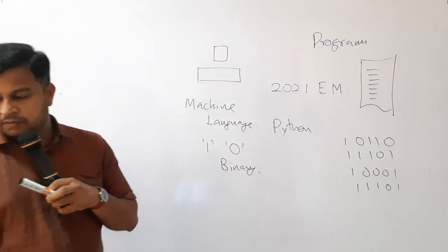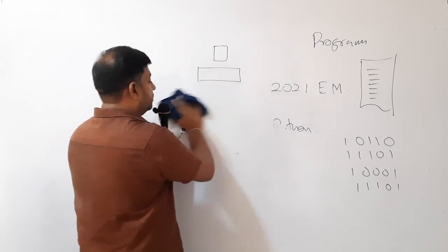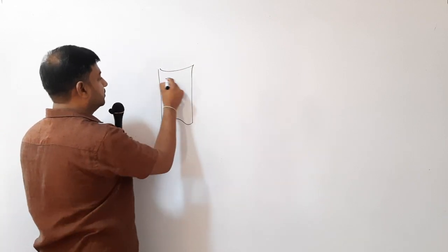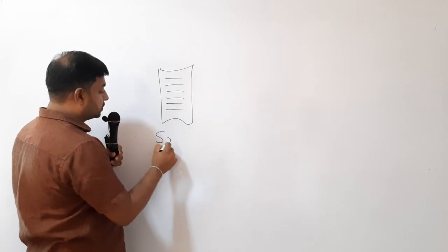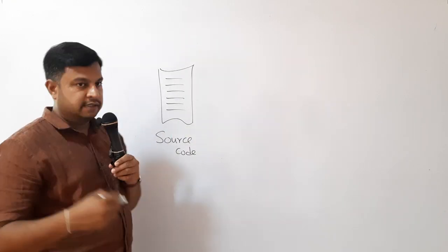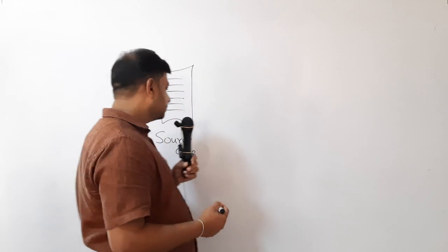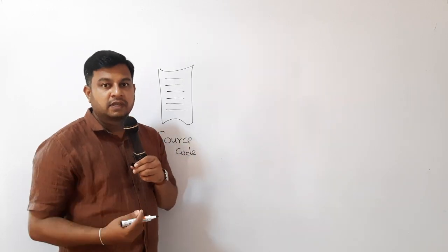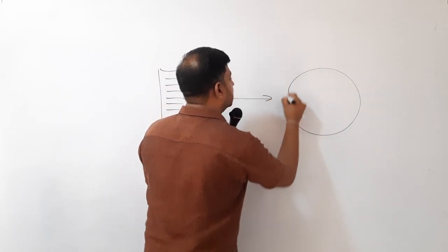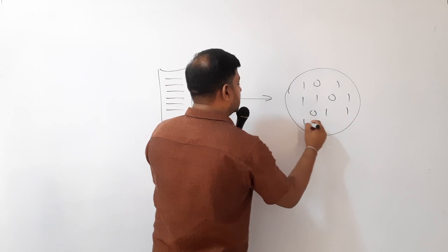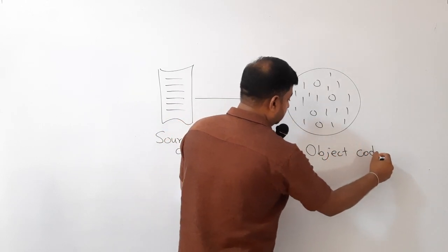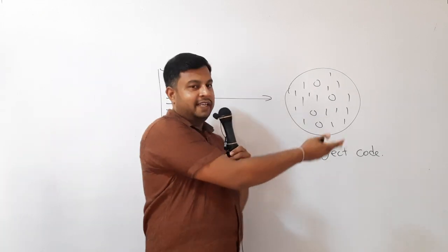We are going to start Python. Whether it's Python or any other language, you have to translate it into machine language. A program written in a programming language like C is called the source code. This source code — written in C, C++, or Python — cannot be directly executed in the computer. You have to translate it into a form which can be understood by the computer. This translated form is in binary and is called the object code. The object code can be executed in the computer. There's also another process called linking, after which you get the application.